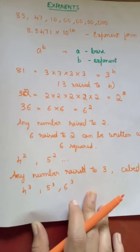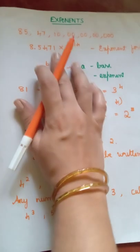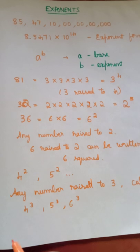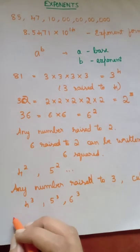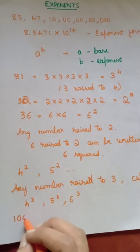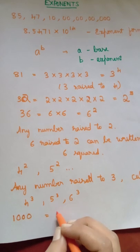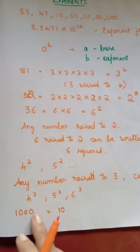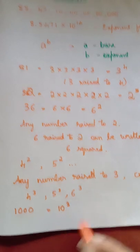Suppose when you have something like when the base is 10, how do you count the exponents? See here, if you have 1000, it is 10 and count the number of zeros: 1, 2, 3. So 1000 is 10 raised to 3.